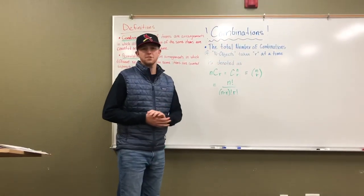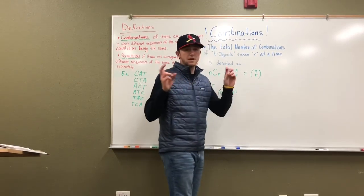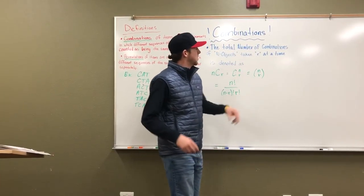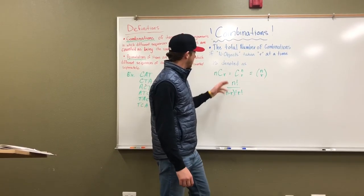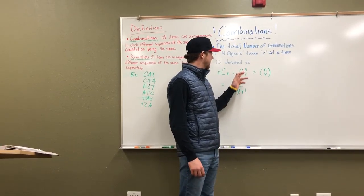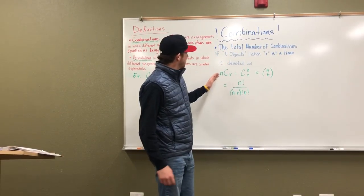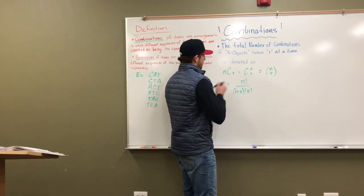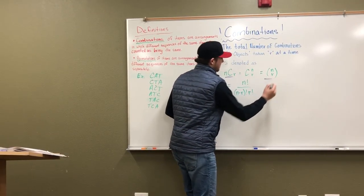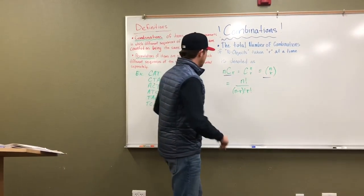All right, let's dig a little deeper into combinations. The total number of combinations of N subjects taken R at a time is denoted as NCR, or it can be CN over R, or NR. These are different notations, but these two right here are the most commonly used, but let's focus on the formula for the real life scenarios.